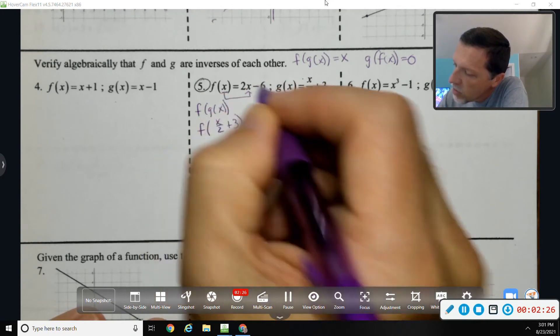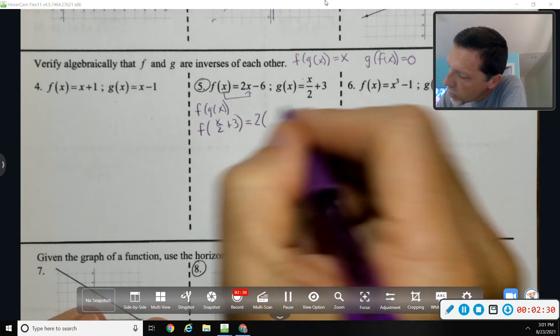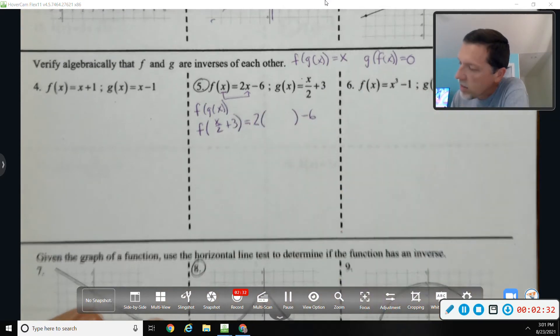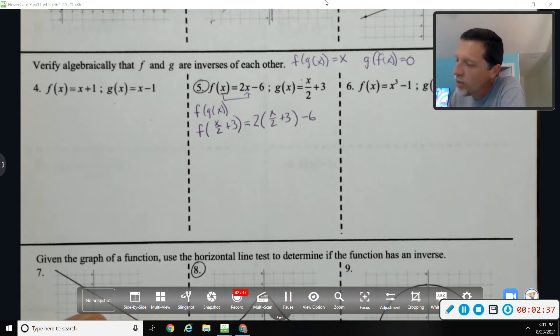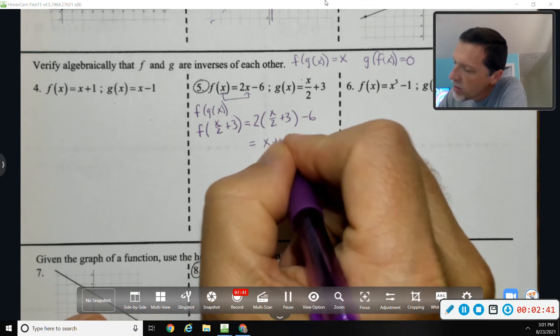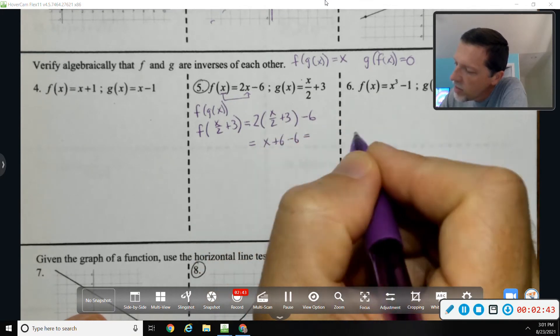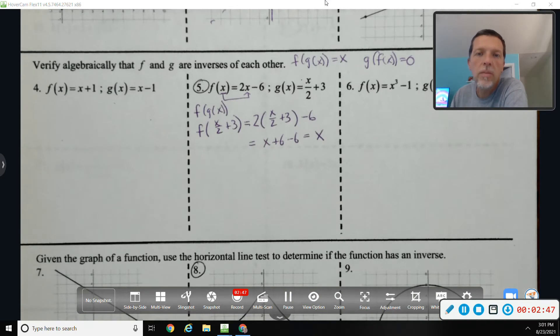Now g of x will be my input to the f function—whatever's in parentheses goes in for x on the other side. So two times input minus six. Well, input is x over 2 plus 3.